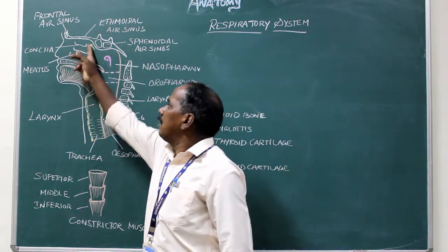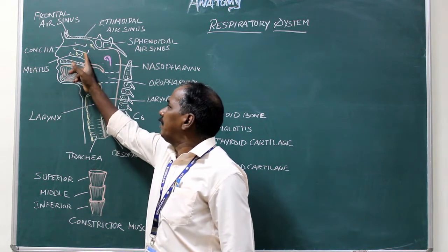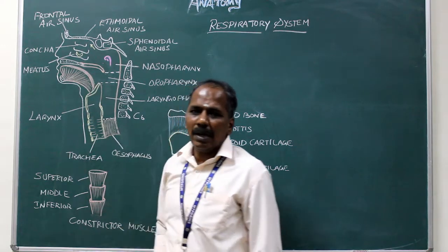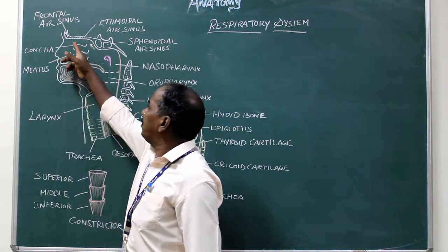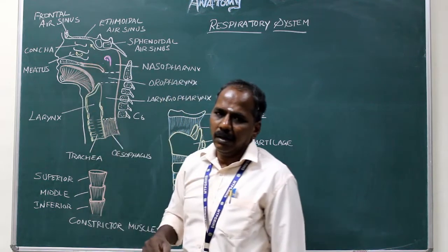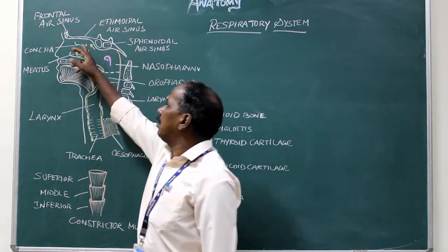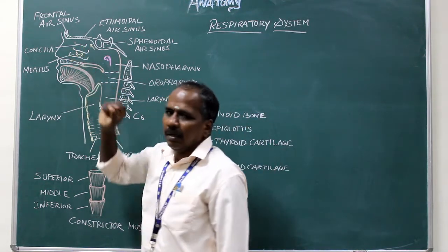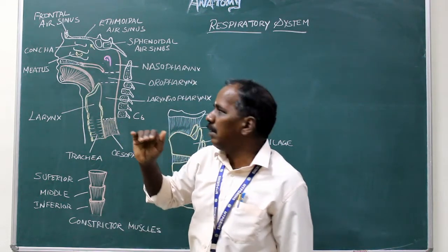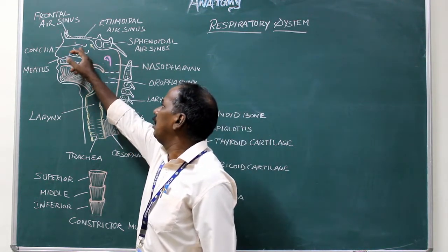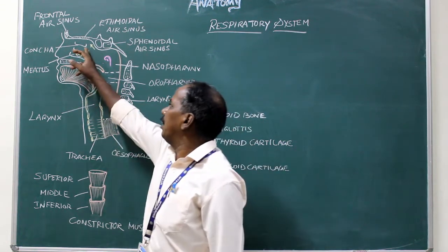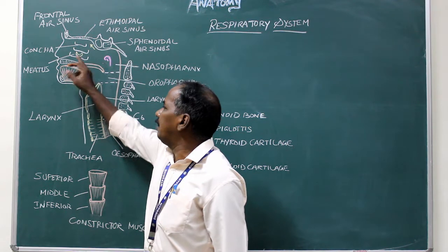The lateral wall consists of three shelf-like projections known as conchae. There are superior concha, middle concha, and inferior concha. Below and lateral to each concha, there is a space known as meatus. There are superior meatus, middle meatus, and inferior meatus.